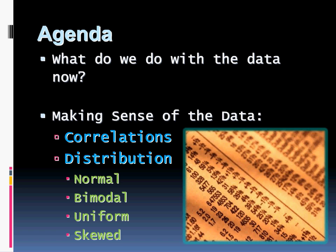Here's what we're going to look at. What do we do with the data now? Remember, today we took a look at entering the data into a spreadsheet and having a coded set of information, but what do we do with that data now? This is where we need to make sense of the data. We need to look for correlations and look at the distribution of the data. We're going to look at four different distributions: normal, bimodal, uniform, and skewed, and try and make sense of it.